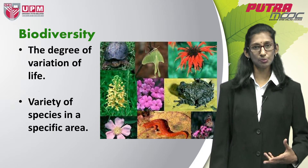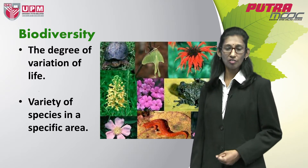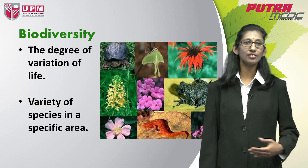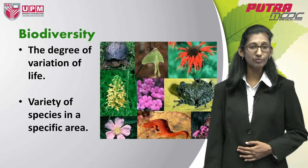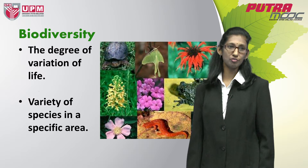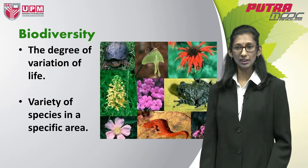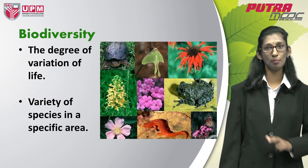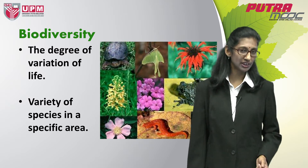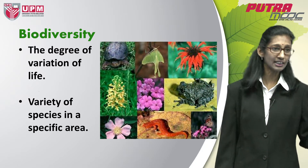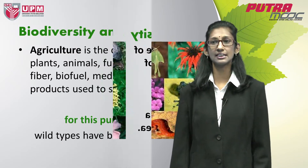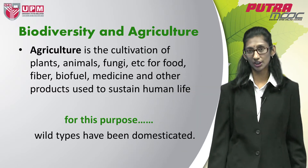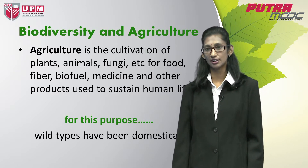Humans exploit the presence of animals, plants, microbes, and fungi by rearing and cultivating them for the purpose of production of food, fiber, medicine and other products in order to sustain human life. This activity and process of rearing and cultivation is what we call agriculture.